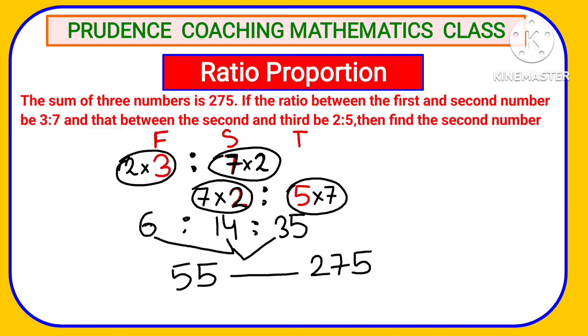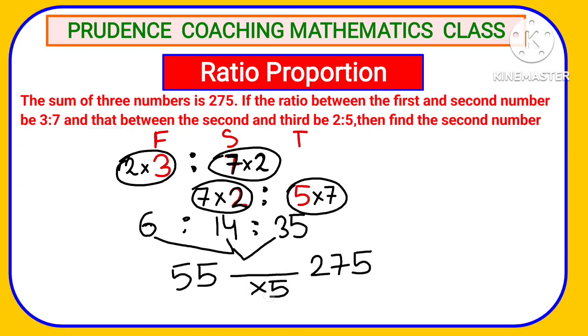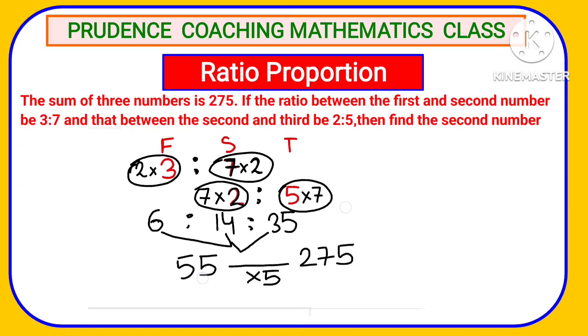So you are asked to find out the second number. Here second number is 14 units in ratio. So you need to multiply 14×5 because 1 unit is 5. So 14×5 you are getting here 70. So the value of the second number is 70.